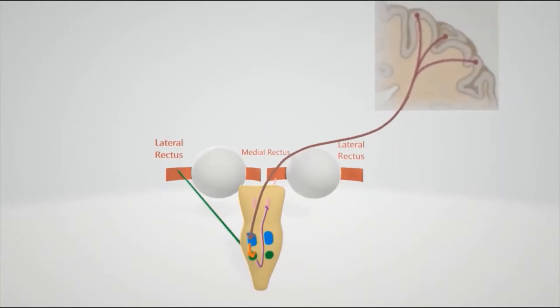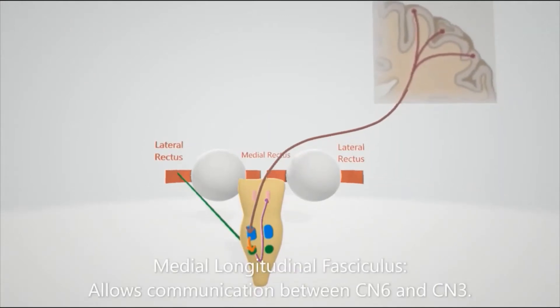This allows communication between the oculomotor and the abducens nucleus. The medial longitudinal fasciculus is right here in purple.